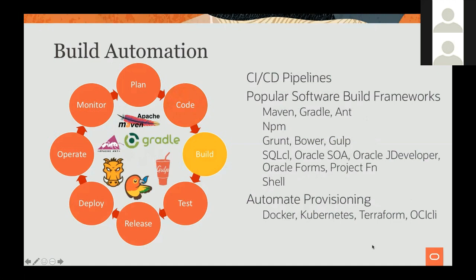That moves us to the build step. For the build, we have continuous integration and continuous delivery pipelines in place, allowing you to define automated processes that take your code and create deliverables out of it. We use popular build frameworks — if you're using Maven, Gradle, or Ant, which are popular with Java developers, those are all supported. Maven can also be used for SOA projects or database projects in Oracle. If you're doing Node.js development, we support NPM to manage libraries and the build process.